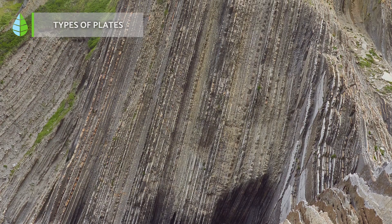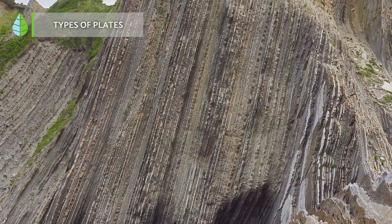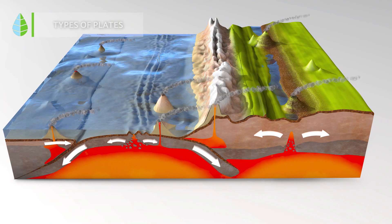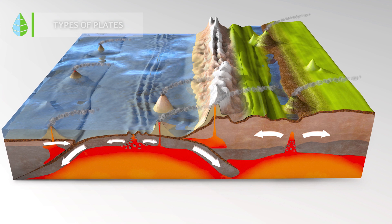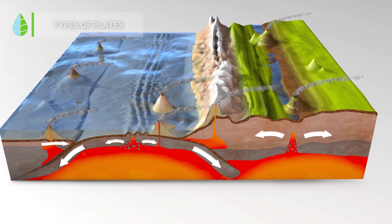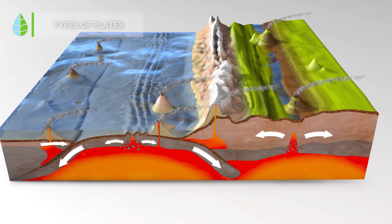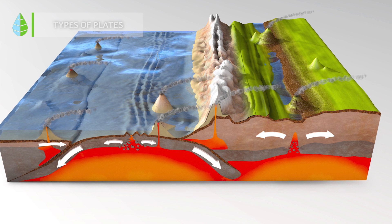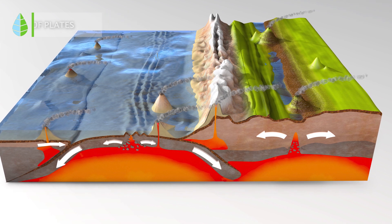Additionally, tectonic plates can be classified based on the type of boundary or edge they have: divergent boundary, convergent boundary, and transform boundary.